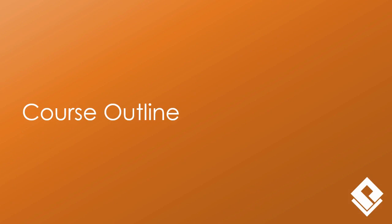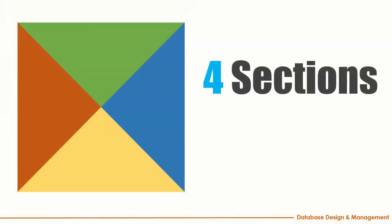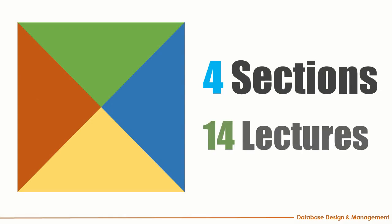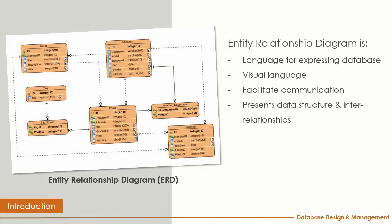Let's outline what we have in this course. We will have four sections and 14 lectures. I'll briefly cover each lecture, and then you will enjoy the training course. In lecture one, we will talk about the entity relationship diagram and give a brief introduction.